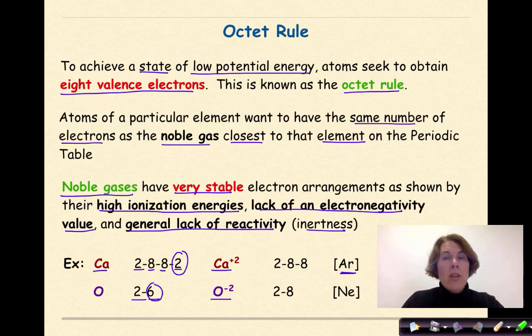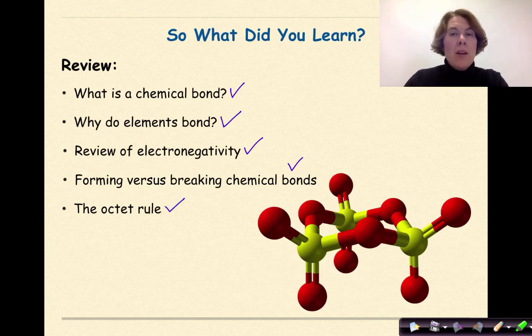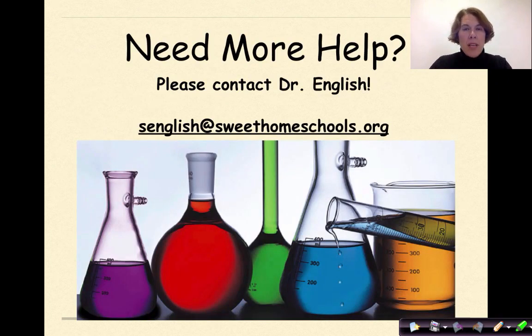So what did you learn? We went over what is a chemical bond. We talked about why do elements bond. We looked at electronegativity. We talked about forming versus breaking chemical bonds. And then finally at the end, the octet rule. Need more help? Feel free to contact me. Have a great day.